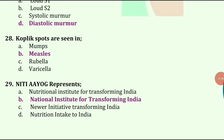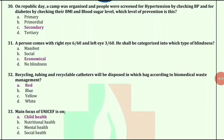NITI Aayog represents National Institute for Transforming India. On Republic Day, a camp was organized and people were screened for hypertension by checking BP and for diabetes by checking their BMI and blood sugar level. Which level of prevention is this? The answer is secondary prevention.